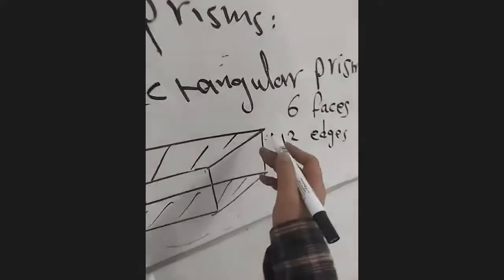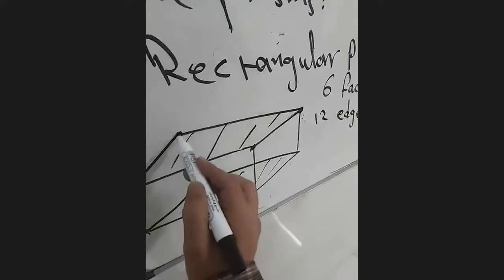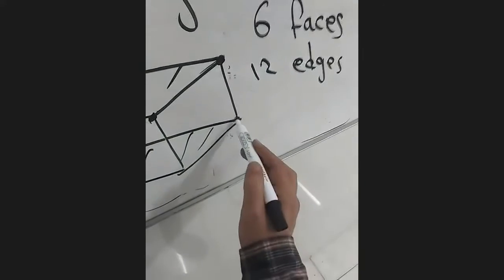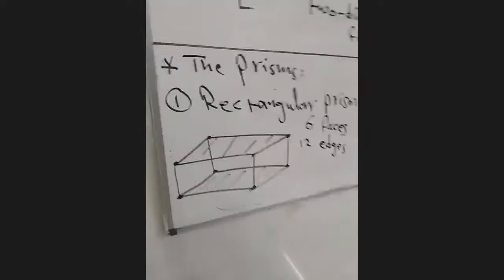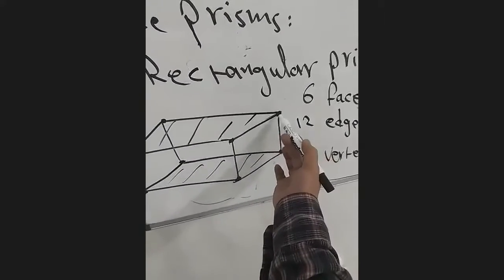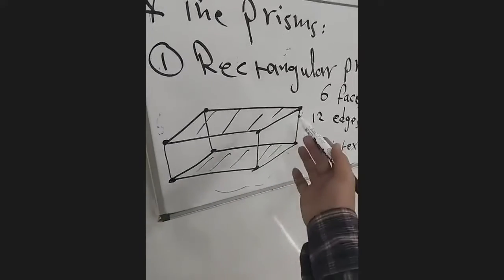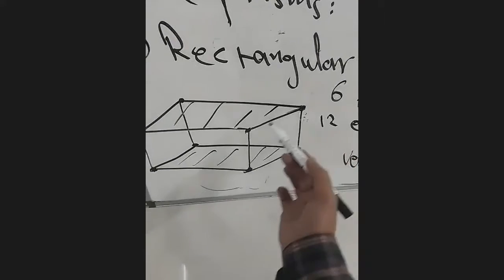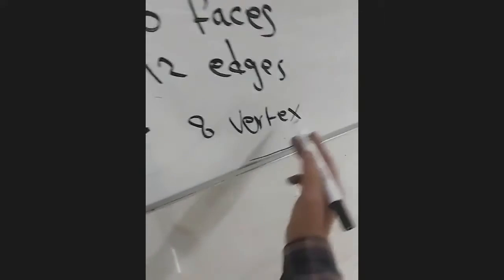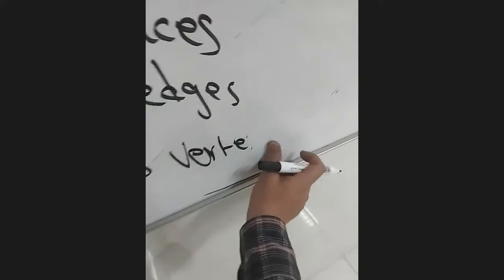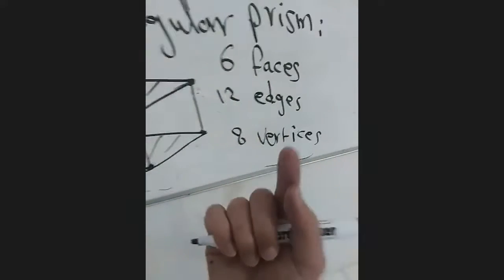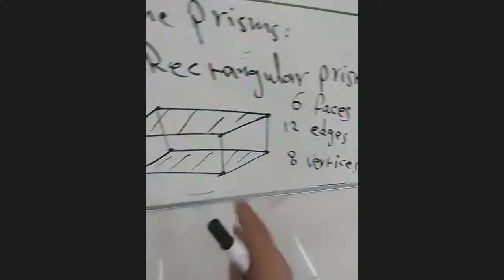How about these points — the points of intersection between the line segments? These points, the corners, we call them a vertex. Vertex is the point where two line segments meet. How many vertices do we have? Let's count: one, two, three, four, five, six, seven, eight. So we have eight. The plural of vertex is vertices — not vertexes. More than one point, we call it vertices.